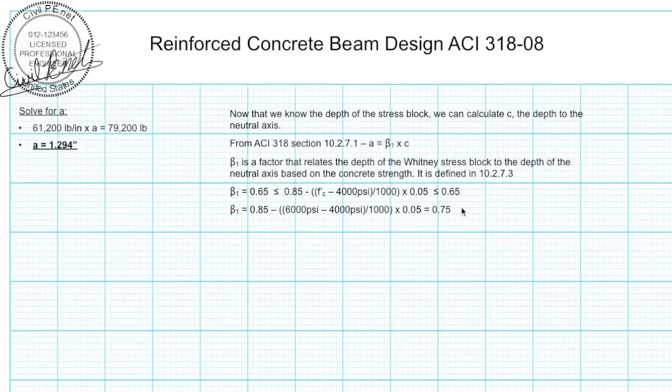So we've got beta1 now. Now we must use beta1 and the a that we calculated to figure out that c is equal to a over beta1, which is equal to 1.725 inches.